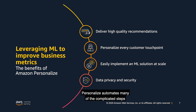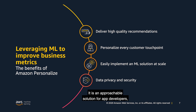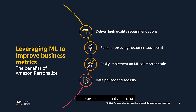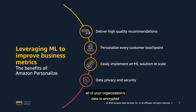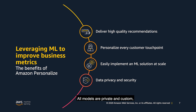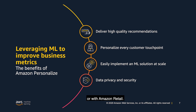Personalize automates many of the complicated steps to build, train, and deploy a machine learning model. It is an approachable solution for app developers and therefore expands the reach of machine learning to a broader set of organizations, and provides an alternative solution to those with competing machine learning priorities. With Personalize, all of your organization's data is encrypted to be private and secure and is only used to create recommendations for your customers. All models are private and custom, and we do not share data between customers or with Amazon retail.